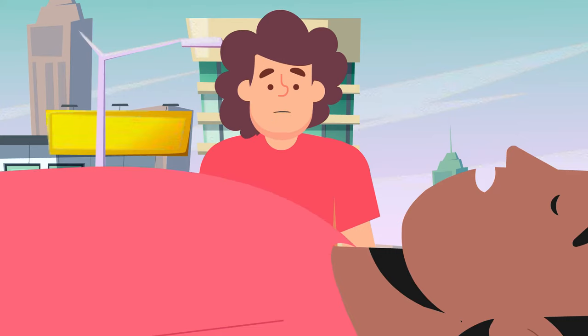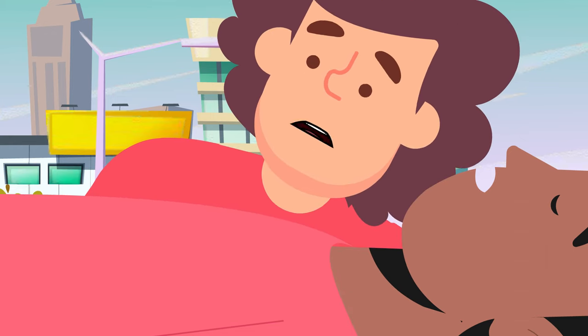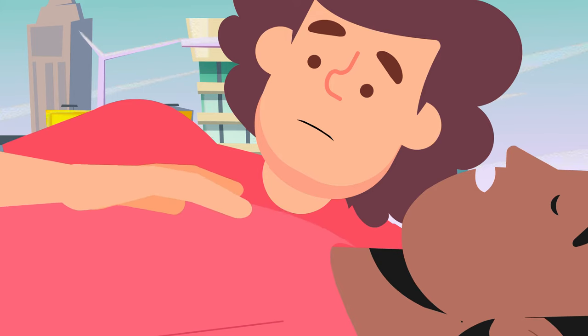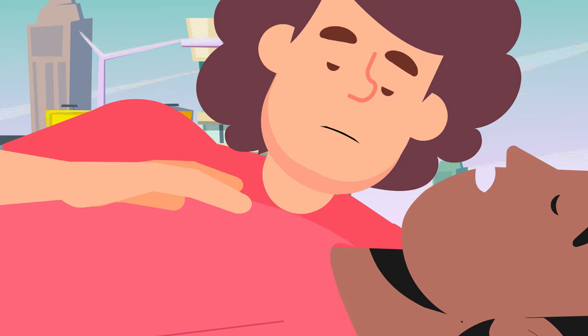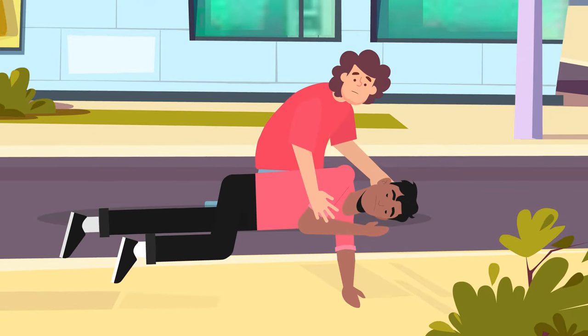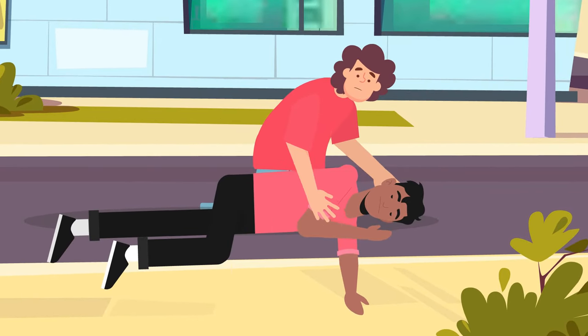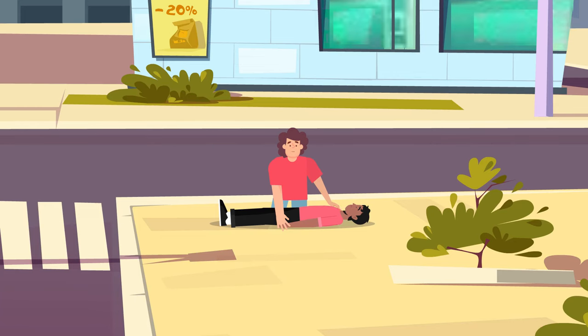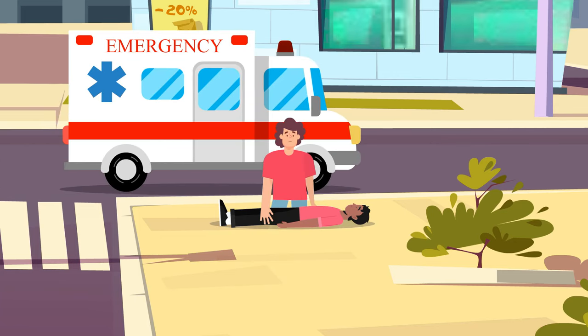Breathing. Check for breathing using the look, listen and feel method for 10 seconds. Look for the rise and fall of the chest. Listen for normal breathing by putting your ear near to their mouth and nose. Feel for breathing by putting your hand on the lower part of their chest, looking and feeling for the rise and fall. If the person is unconscious but breathing, turn them onto their side, carefully ensuring that you keep their head, neck, and spine in alignment. Monitor their breathing and manage any injuries until the paramedics arrive.